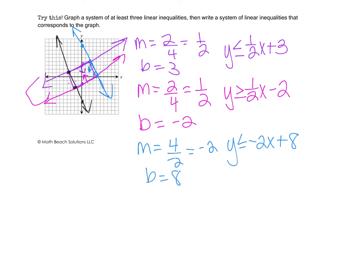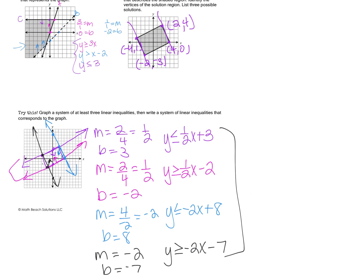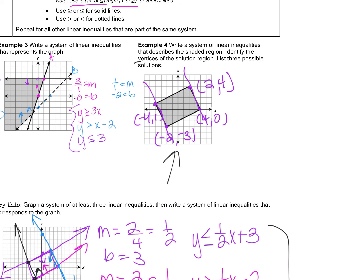For the black line: slope is also -2 (parallel to the blue line), and the y-intercept is -7. The solution requires shading above, so the inequality is y ≥ -2x - 7. The vertices of the solution region are (-4, 1), (-2, -3), (4, 0), and (2, 4). Three possible solutions within the shaded region are (0, 0), (1, 1), and (-1, -1).